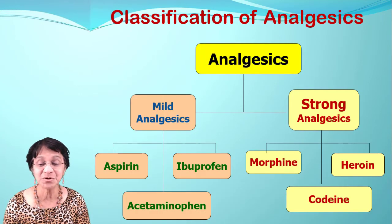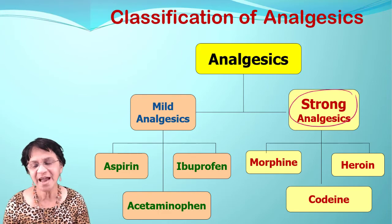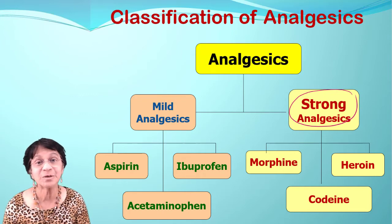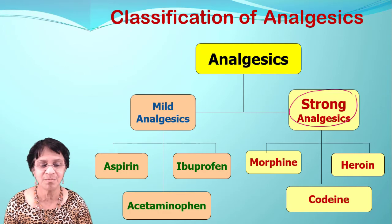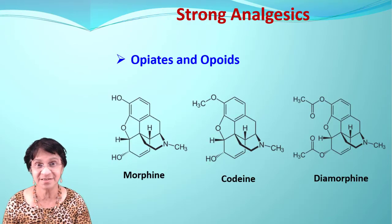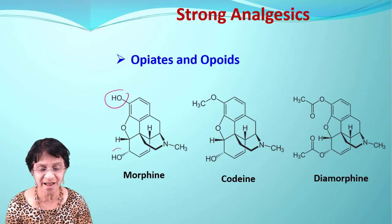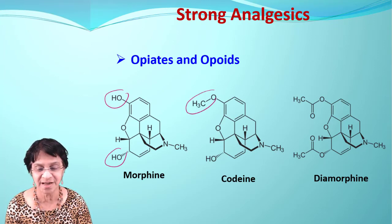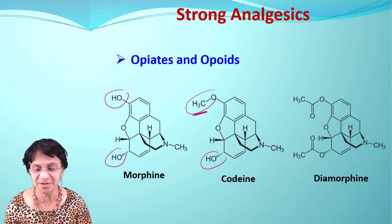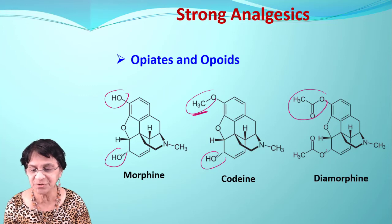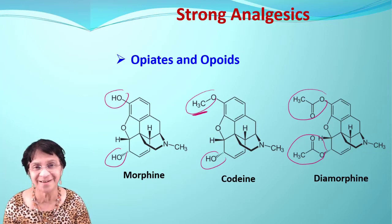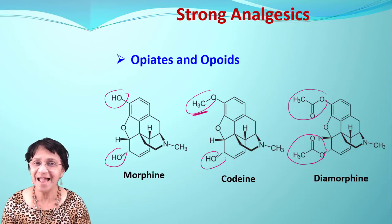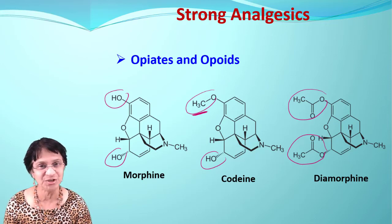Moving on to strong analgesics, which have been discussed in detail in a separate video on opiates. The main ones covered here are morphine, codeine, and heroin (also called diamorphine). Looking at their structures: morphine has two hydroxyl groups, codeine has one methoxy group, and diamorphine has two ester groups. Everything else in the structure is the same — only the side chains differ, and those differences change the properties significantly.